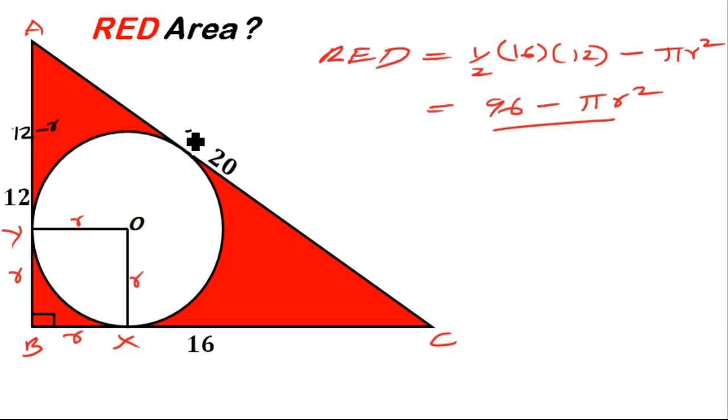So if you let this tangent point to be point Z, then you can see the tangent AY is intersecting with the tangent AZ. So the tangent AY must be equal to the tangent AZ. So if from A to Y is 12 minus R, then from A to Z is also 12 minus R.